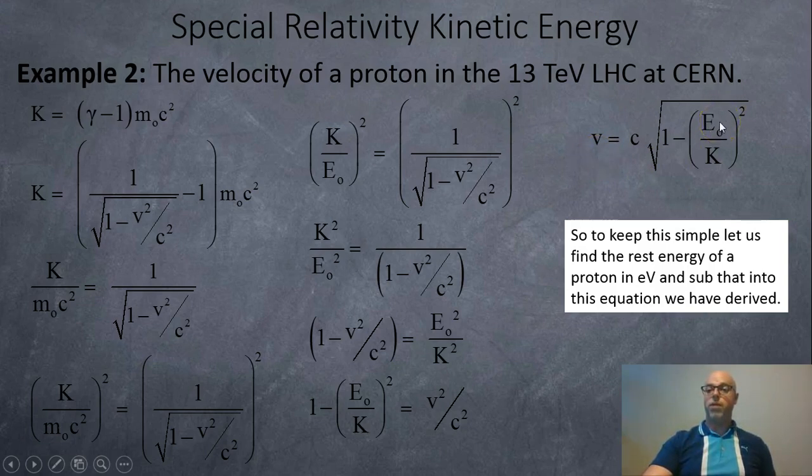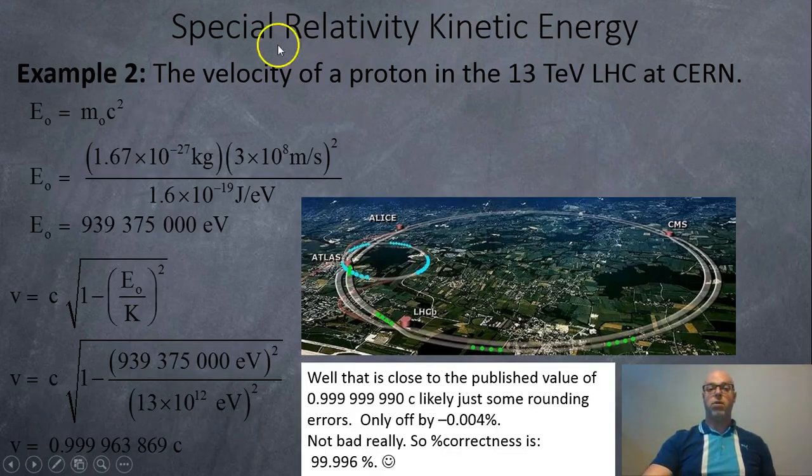Just take the rest energy, divide by the kinetic energy, subtract that from 1, and multiply by the speed of light. So it might be nice to know the rest energy of a proton then. It's easier to find that on the side here.